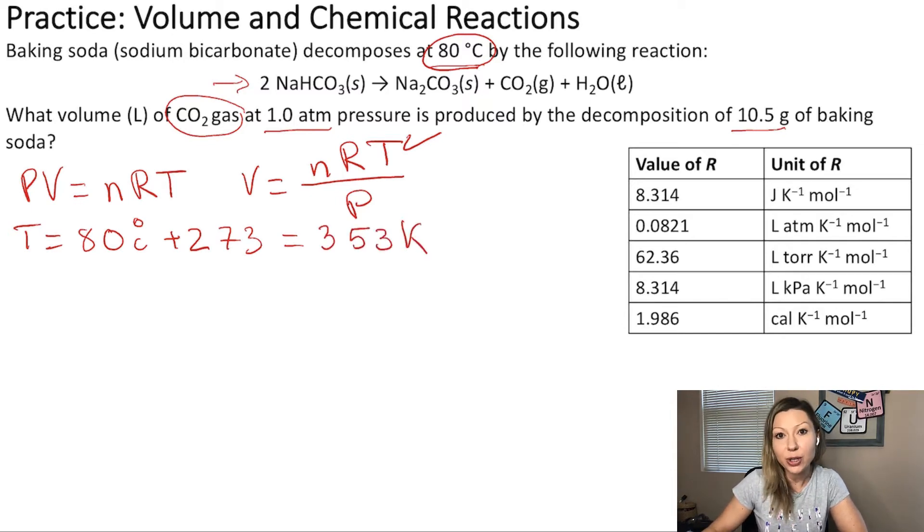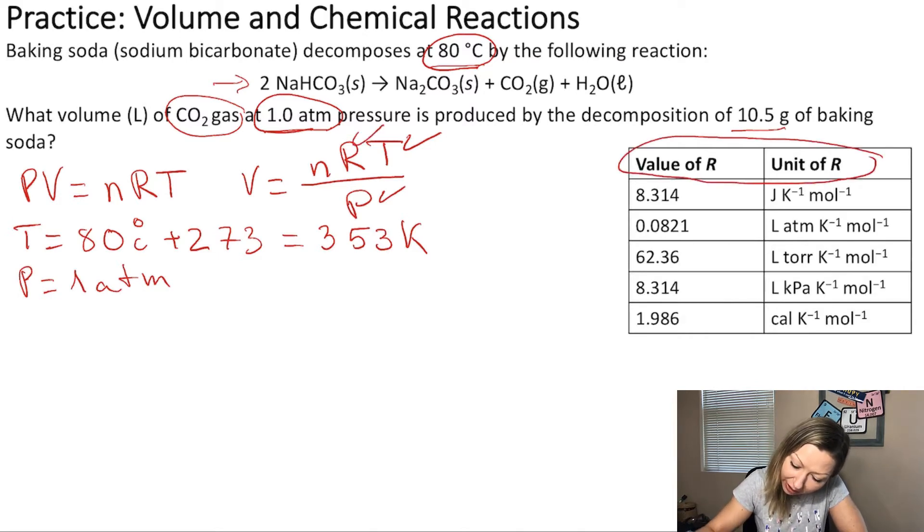Are we given the pressure? Yes, we have the pressure. We have one atm pressure. Do we have the ideal gas constant? Yes. So, the R value, we can look at this nice little table here. We can match it up with the units of the pressure as we usually do. And because the pressure is given in ATMs, we are going to use this value for R.